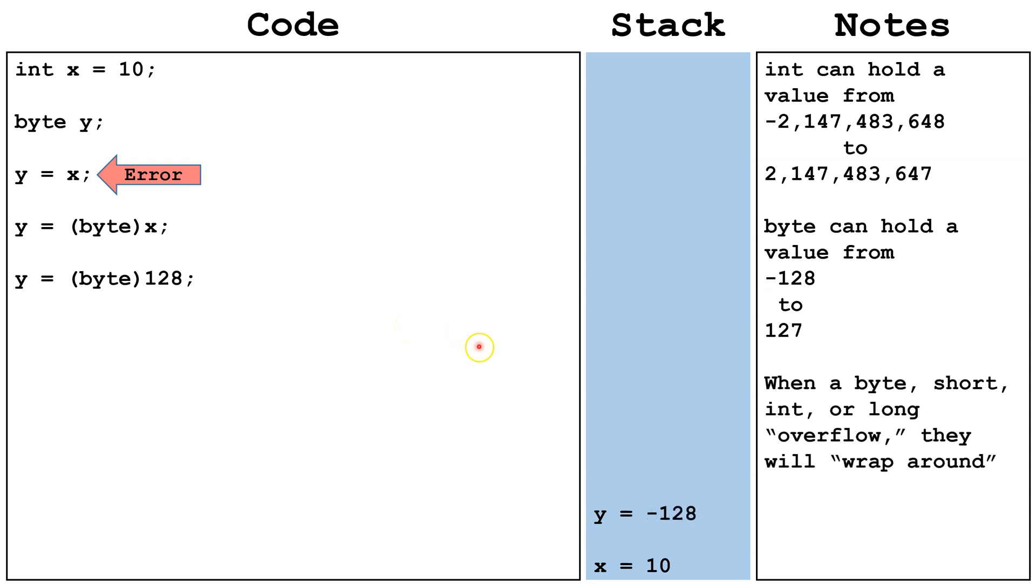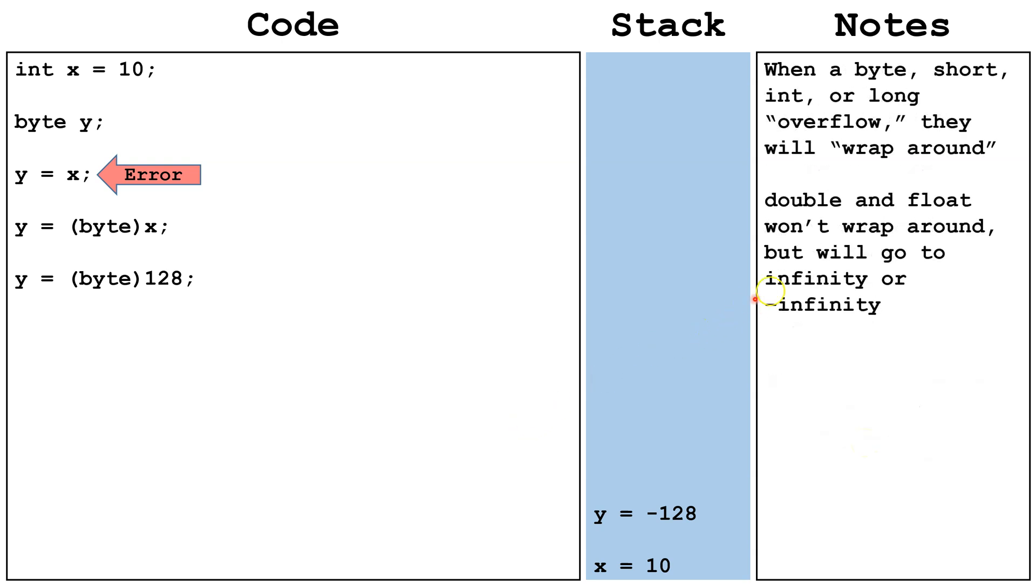Other data types can roll over too when they overflow. Byte, short, int, and long will all overflow and wrap around to the other side. The primitive type double and float will not wrap around when they overflow. Instead, they will go to infinity if the value is too high or negative infinity if the value is too low.